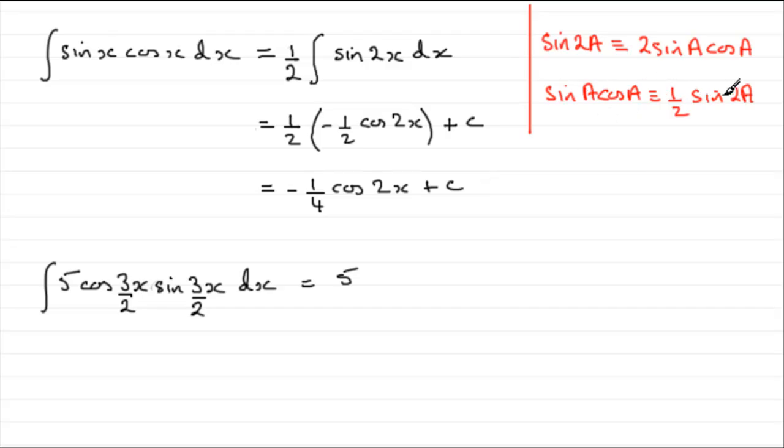So, we end up with half sine of 2a, two lots of 3x over 2, which is going to be 3x.